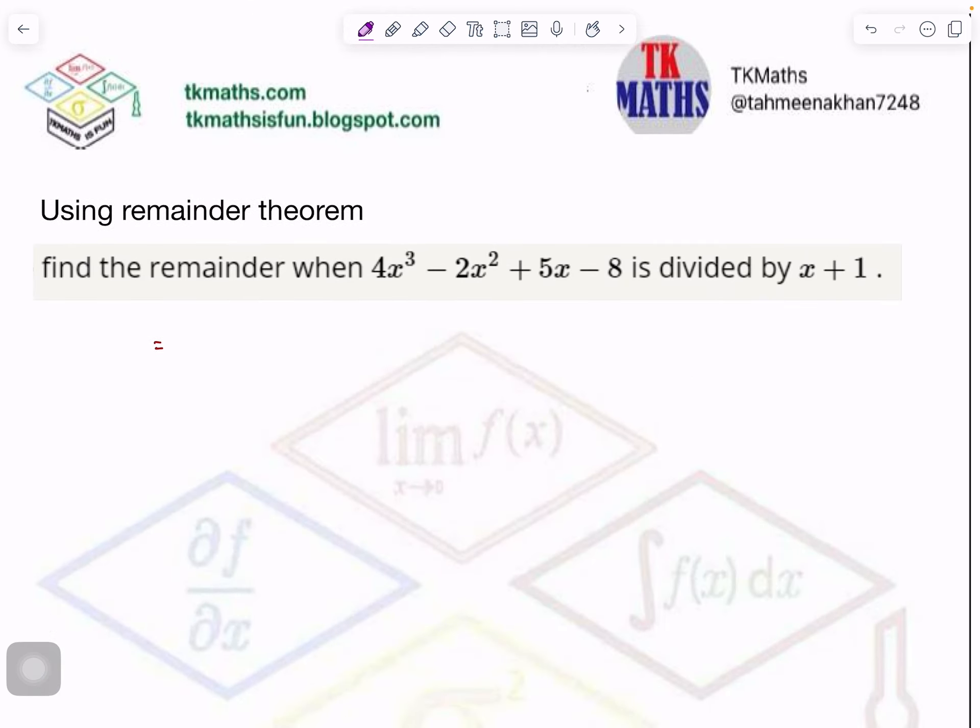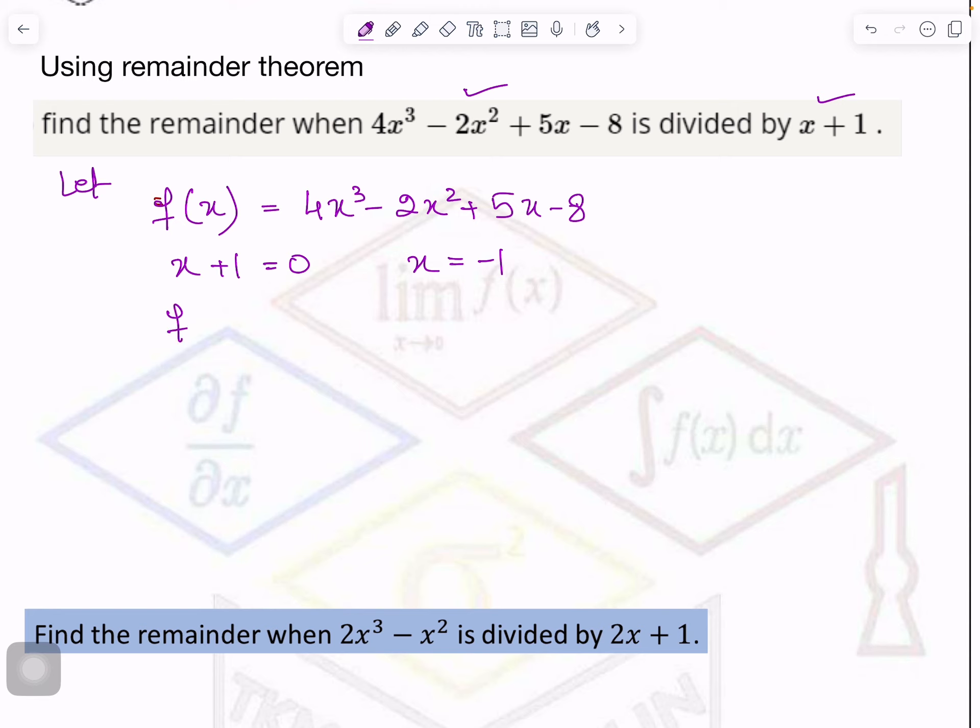So the question comes like this. Find the remainder when this function is divided by x plus 1. So you will say let f(x) equals the function, you will write as it is the polynomial. And from your divisor, you will take the value of x which you will plug in the polynomial. Be very careful with the negative sign. Put the bracket properly because this is where students usually make mistakes. You have to show the substitution. After that, you can use the calculator straight away to get the answer. So remainder is minus 19.